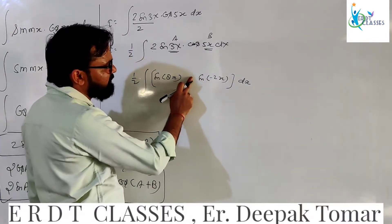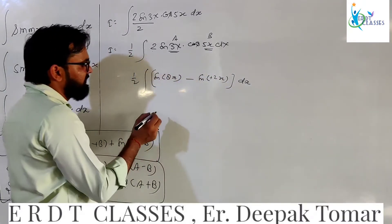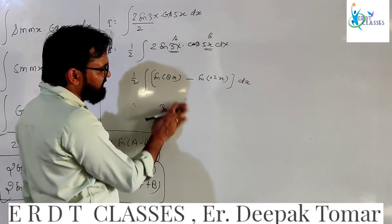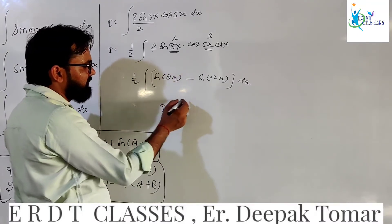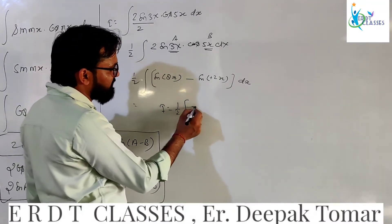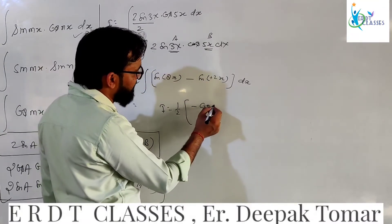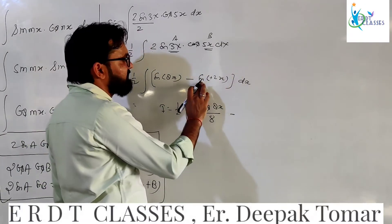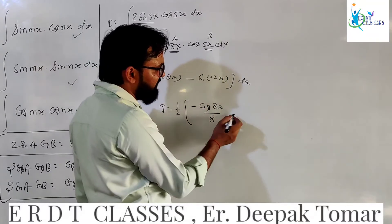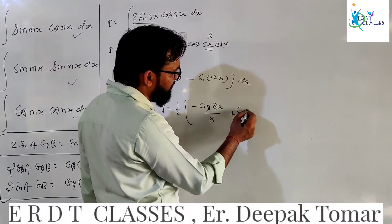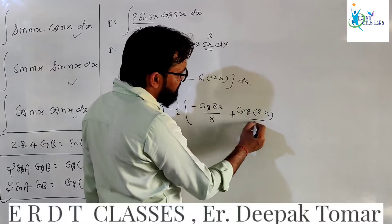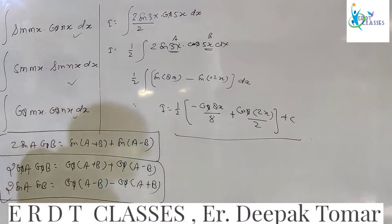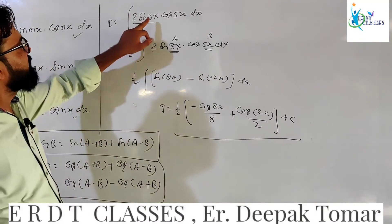Now integrating: (1/2) times [sin(8x) + sin(−2x)] dx. The integral of sin is minus cos. So it becomes (1/2) times [−cos(8x)/8 + cos(2x)/2] + C. That is the integration of sin 3x cos 5x.